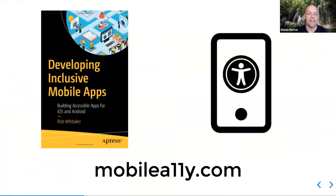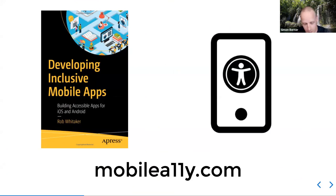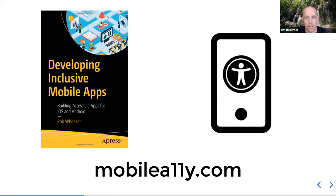Yesterday I had the pleasure to join Rob Whitaker's first accessibility course about iOS. Rob Whitaker is an English guy who has made fantastic resources and blogs around mobile accessibility — you can find him on his website. If you want to get deep into accessibility, have a look — you'll definitely learn a lot. The session was highly interactive and loaded with tons of important information. He also published a book on developing inclusive apps, which is definitely worth checking out.